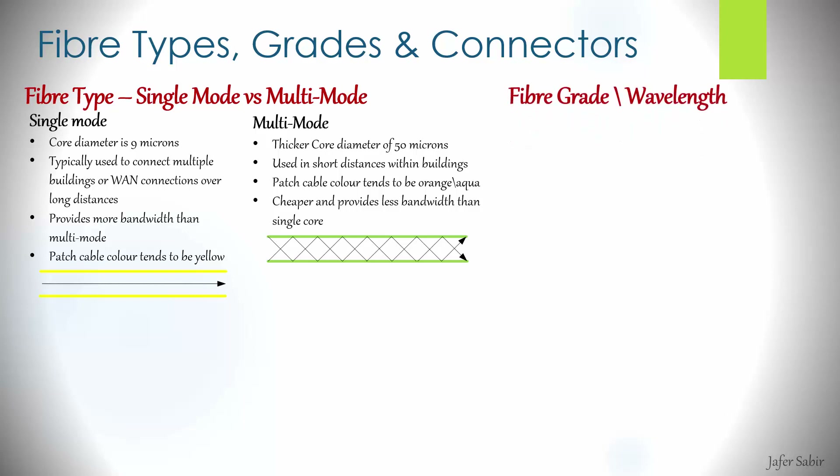We've also got fiber grades and wavelengths, where there are single mode grades and multi-mode grades. They mainly differ due to bandwidth and distance support. Typically, the higher the number — for example OM5 — will offer more bandwidth and distance than OM2. Let's have a quick look at each one.